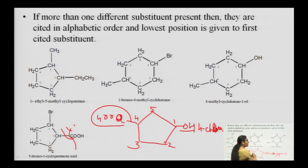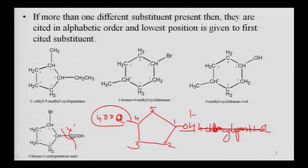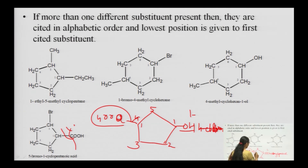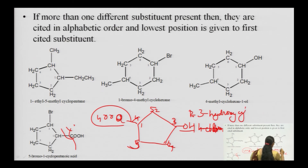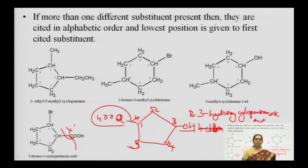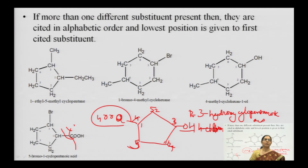When a carboxylic functional group is present, it has the highest priority. Numbering clockwise: 1, 2, 3, 4, 5. The hydroxyl group is at position 3. The name is 3-hydroxycyclopentanoic acid, also written as 3-hydroxycyclopentane-1-oic acid — carboxyl group gives the family name cyclopentanoic acid, and OH acts as a substituent.